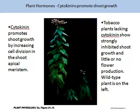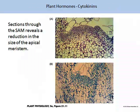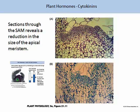Cytokinins can promote shoot growth by increasing cell division in the shoot apical meristem (SAM). An experiment on tobacco plants lacking in cytokinin shows strongly inhibited shoot growth and little or no flower production, with the wild-type plant shown on the left. Images on the slide reveal sections of shoot apical meristems, showing a reduction in the size of the apical meristem when cytokinins are applied.